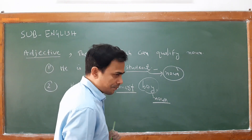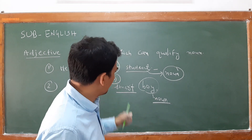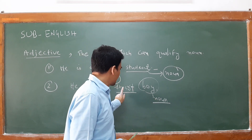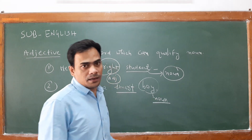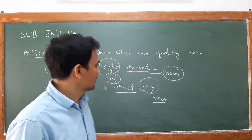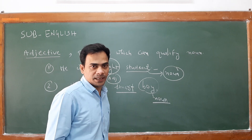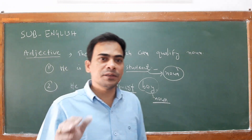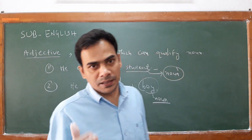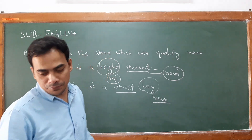The second example: 'He is a smart boy.' Here, 'boy' is your common noun, and the word 'smart' is describing your noun 'boy.' So, an adjective simply means a word which can qualify or explain your noun.